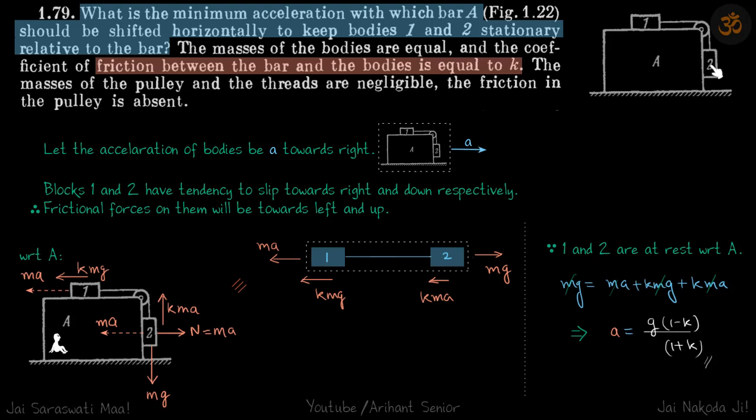Now when, like we discussed, the blocks have the tendency to fall down, which means the direction of friction on the block should be upwards. So on this block friction will be upwards and on the first block friction will be towards left.